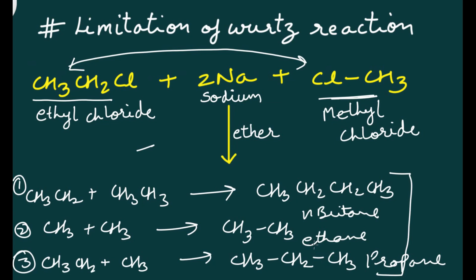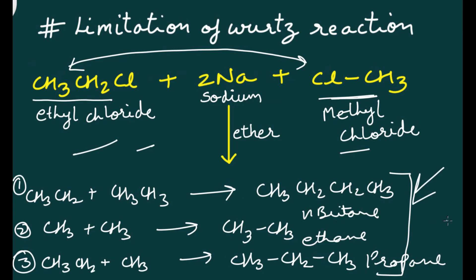The separation of these three products is really difficult because of the small difference between the boiling points of these molecules. The boiling point difference is very small, so it is difficult to separate them. That's why Wurtz synthesis is used only for the formation of symmetrical alkanes — if you take unsymmetrical alkyl halides, you will receive a mixture of products which is difficult to separate.